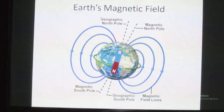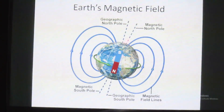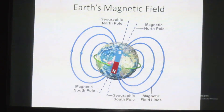This is the geographic North Pole, but we call this the magnetic South Pole. If we go through Earth's magnetic field with a magnetic needle, the needle will point North. At the magnetic poles, the angle of inclination will be 90 degrees — this angle of inclination will be 90 degrees at the magnetic poles.